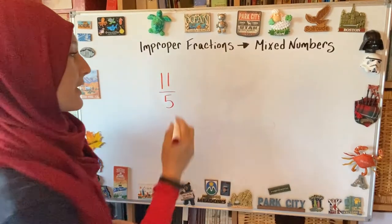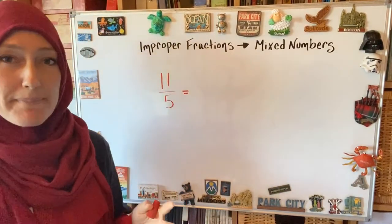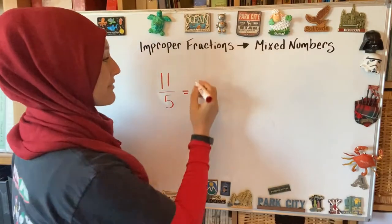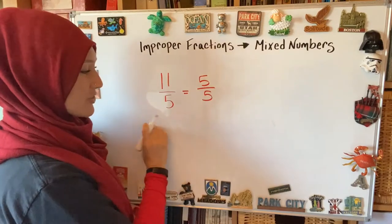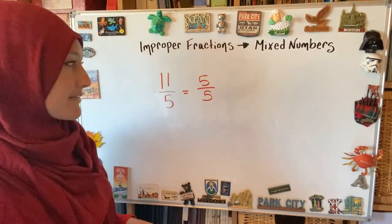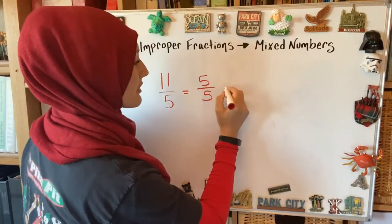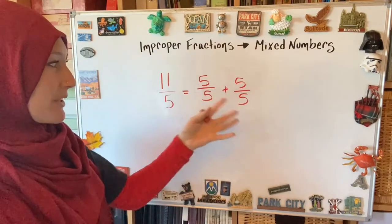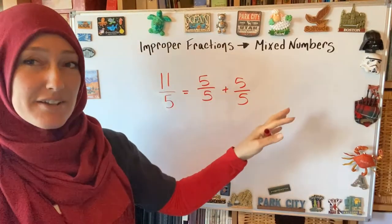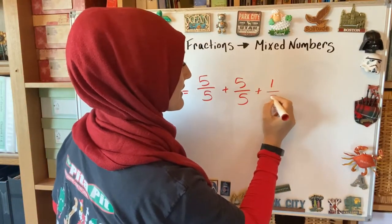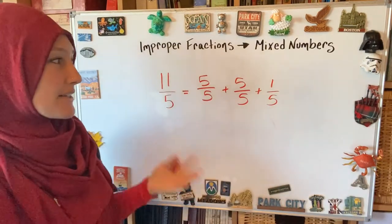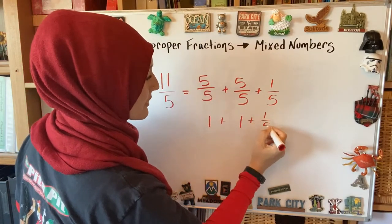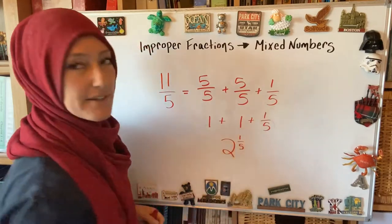For 11/5, think about what whole amounts are inside. How do I take out a whole amount in terms of fifth-sized pieces? I take out five-fifths — that's one whole represented as 5/5. Then see what's left. Can I take out another five-fifths? Yes, because five and five is ten-fifths, and I still have some left. So I have 11/5: here's 10/5 plus one more fifth. That's my 11/5 expanded. How many wholes did I have? One whole and another whole, with one-fifth left over. Final answer: two and one-fifth.